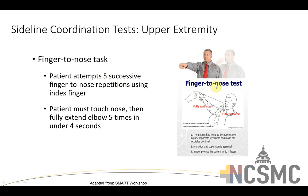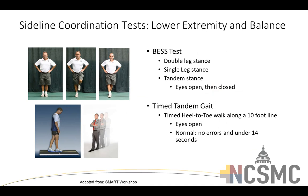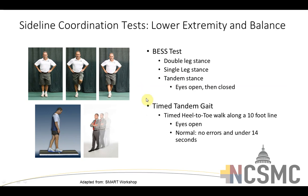For lower extremity and postural coordination, have the athlete stand in three different stances: double-legged, single-legged, and tandem — with eyes open and eyes closed, for 30 seconds each. Count how many times they lose balance, take a hand off their waist, need to re-correct, or touch down with a toe. If they open their eyes during the eyes-closed portion, that's also an error. This is the Balance Error Scoring System, or BEST, which is part of the SCAT 5.